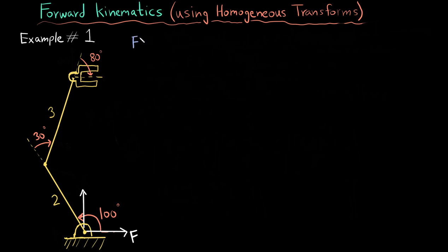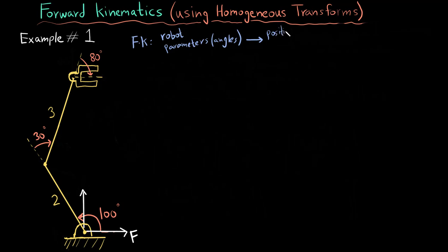Forward kinematics simply means: you are given the robot parameters — in this case the joint angles — and given those parameters you have to find out the location and orientation of the end effector. So you have to find out the position and orientation of the end effector. This is all there is to it.